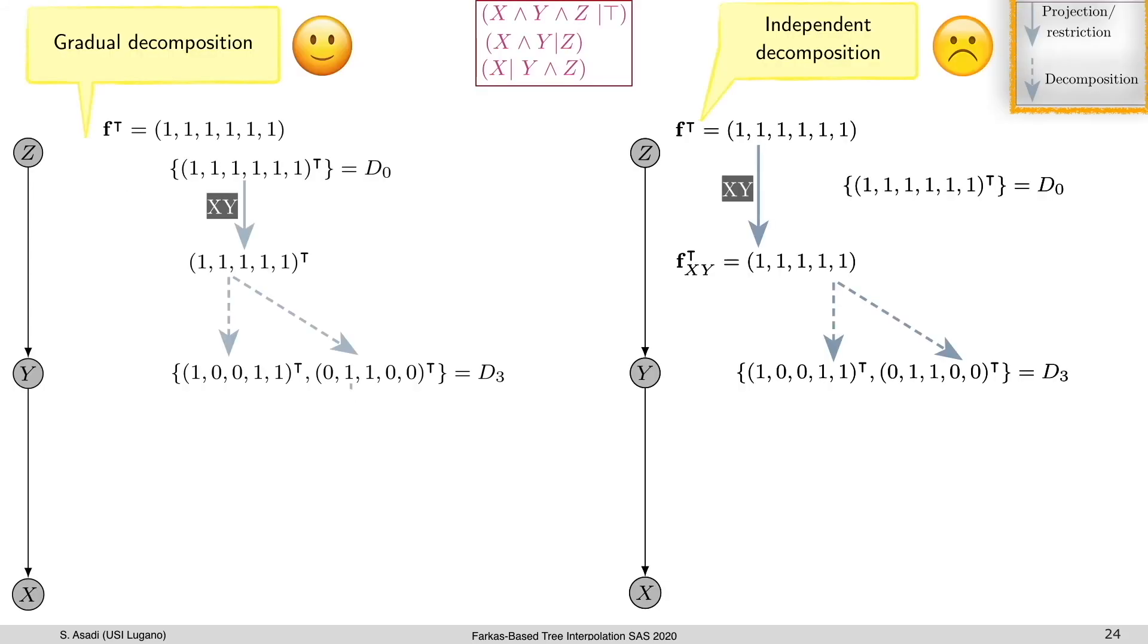Let's compare the gradual decomposition shown on the left and the independent decomposition shown on the right. Here is a tree structure with three partitions x, y, z, and you see the vector of Farkas coefficients in the root shown with bold f. The capital D's show possible decomposition of the vector of Farkas coefficients for each binary interpolation problem. The solid gray arrow with label x, y shows the restriction to the subsystem x, y, and the dashed arrow shows the decomposition. The decomposition corresponding to nodes z and y shown with D0 and D3 are the same in both cases. The differences appear when computing the decomposition corresponding to node x.